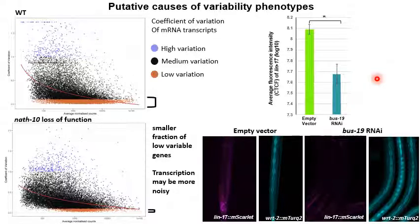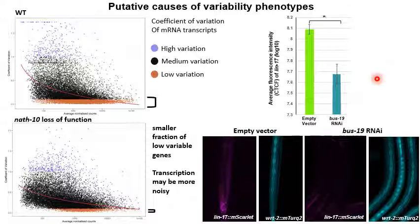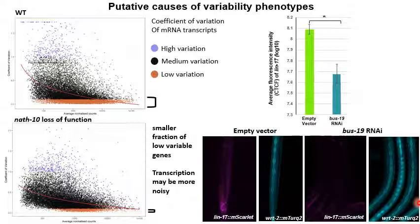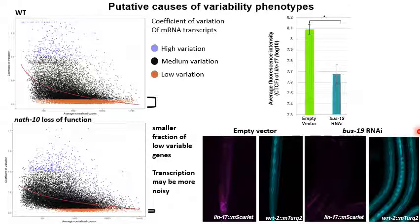Together, these results show two novel candidates for seam cell regulators that may potentially be modulating robustness and noise within developing seam cells. We have a few more experiments to do for each project to fully characterize the mechanisms, but both have provided highly interesting results. Thank you for listening — please feel free to email me any questions at m.hints@ic.ac.uk.